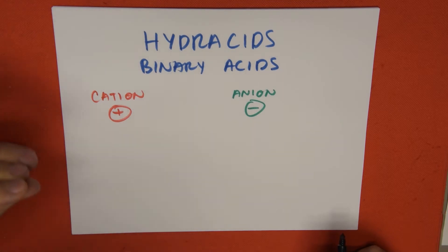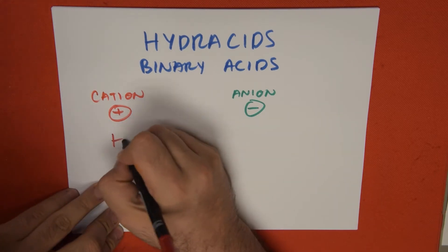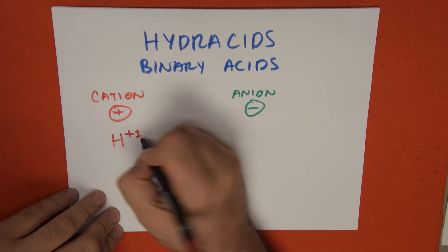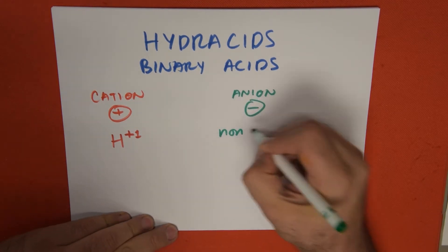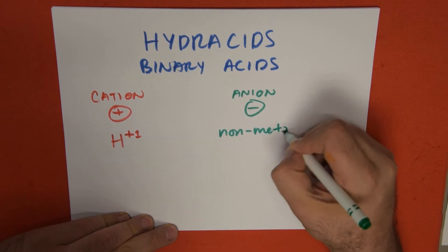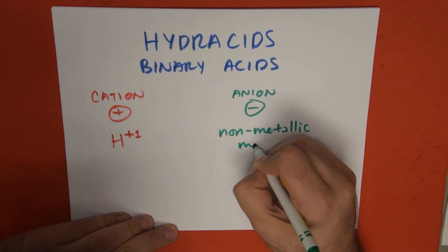Welcome back. Today we're going to learn about the nomenclature for hydracids, also called binary acids. To identify these, the cation is always going to be hydrogen with a plus one charge, and the anion is always going to be something non-metallic or maybe a metalloid, but usually non-metallic.